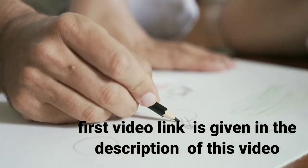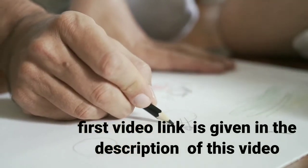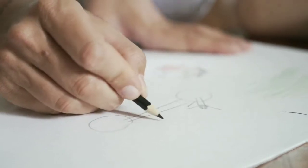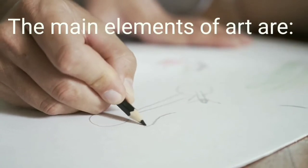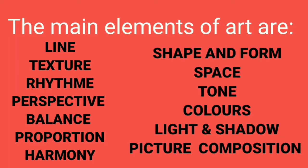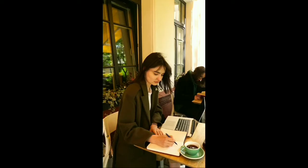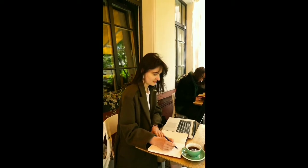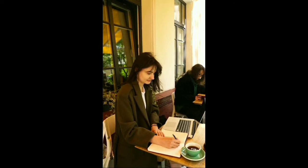In this video we will learn about different elements of art and we will also do some tasks to practice them. There are many elements of art. The main elements are line, texture, rhythm, perspective, balance, proportion, harmony, shape and forms, space, tones, colors, light and shade, and picture composition. We will discuss each one precisely.